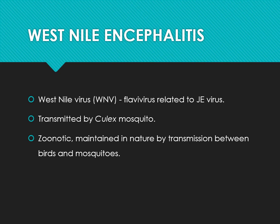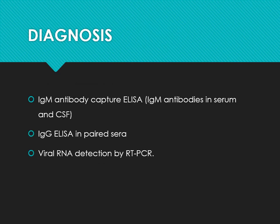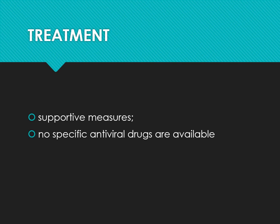West Nile encephalitis — the West Nile virus is also a flavivirus, related to Japanese encephalitis virus, transmitted by Culex mosquito. It is zoonotic and maintained in nature by transmission between birds and mosquitoes. Incubation period is 3–14 days; 80% of people remain asymptomatic, and the remaining can develop fever or encephalitis. Diagnosis is primarily by serology — IgM antibody capture ELISA is preferred. Paired sera are needed for IgG ELISA. Viral RNA detection by PCR can also be used. Treatment is supportive; no specific antiviral drugs are available.